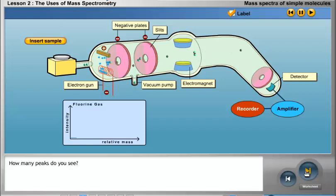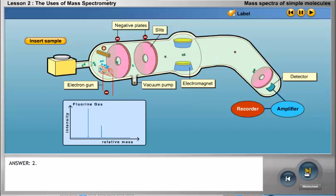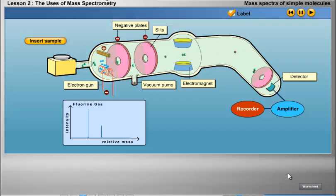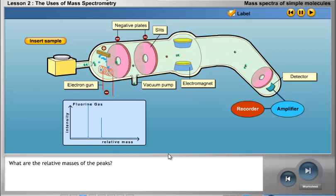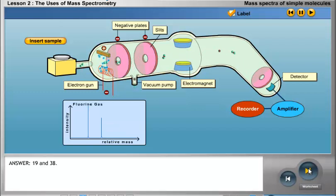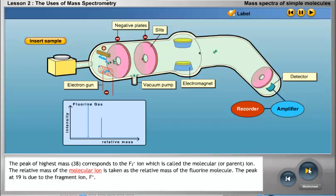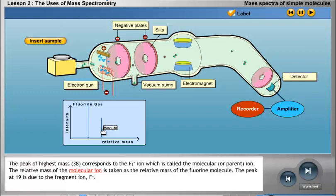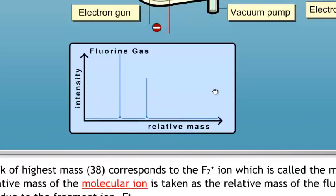The mass spectrum of fluorine shows two peaks. The relative masses of the peaks are 19 and 38. The peak of highest mass, 38, corresponds to the F2+ ion, which is called the molecular or parent ion. The relative mass of the molecular ion is taken as the relative mass of the fluorine molecule. The peak at 19 is due to the fragment ion, F+.